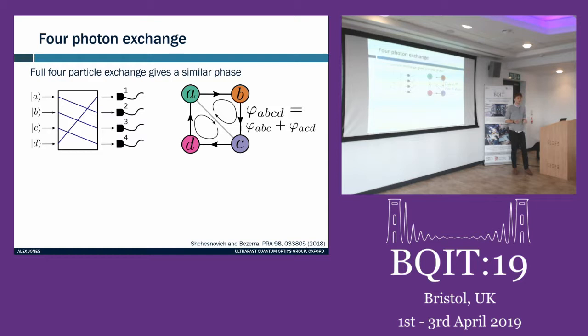That means you could do a series of three-photon experiments, measure statistics, and use those to predict the outcome of a four-photon experiment. This paper shows that's scalable: if you have n photons none of which are orthogonal, you can always describe the interference using two- and three-photon experiments.